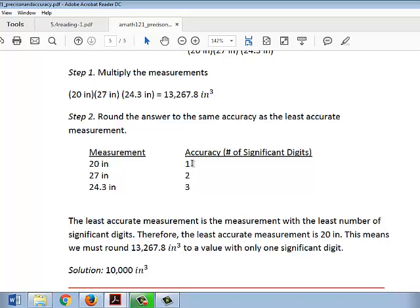So, we need to round our answer to the same accuracy as the twenty-inch measurement. It also must be rounded to one significant digit. Rounding this to one significant digit would be only keeping one non-zero digit. Since three is less than five, we have to round down to ten thousand inches.